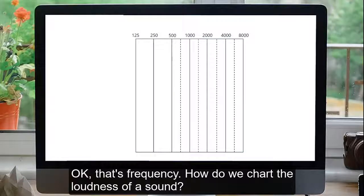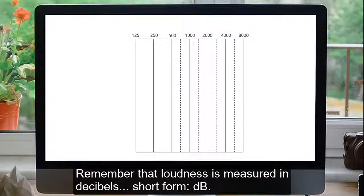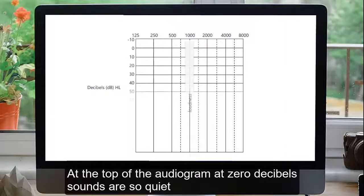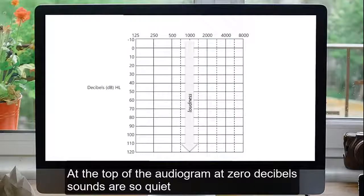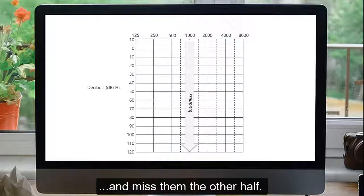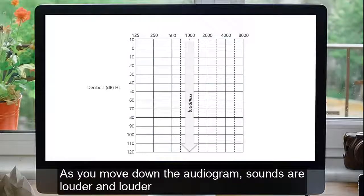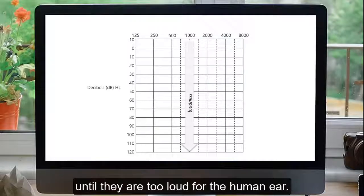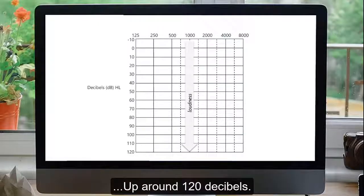How do we chart the loudness of a sound? Remember that loudness is measured in decibels, short form dB. At the top of the audiogram, at zero decibels, sounds are so quiet you might, with typical hearing, just be able to hear them half the time, and miss them the other half. As you move down the audiogram, sounds are louder and louder until they are too loud for the human ear, up around 120 decibels.